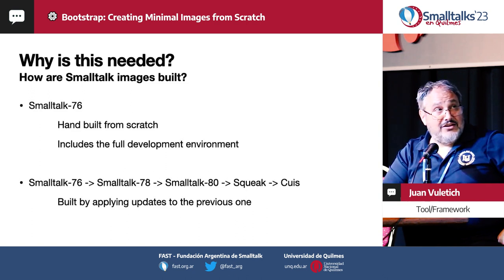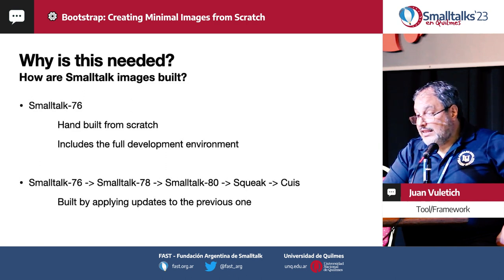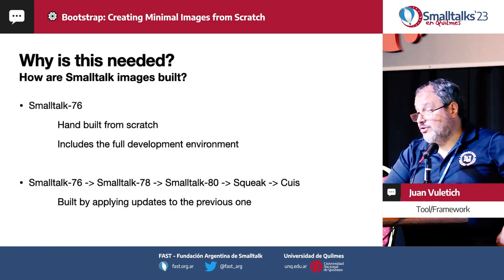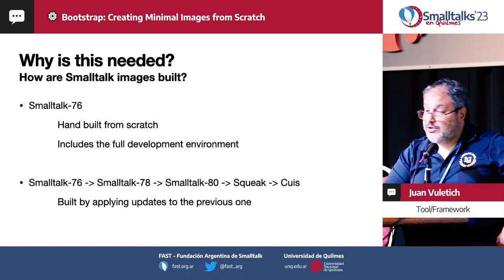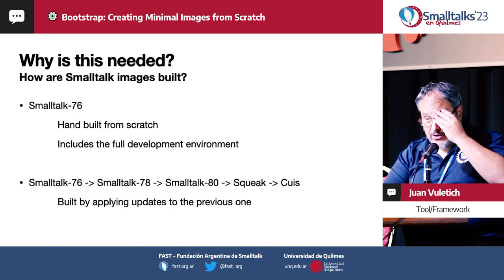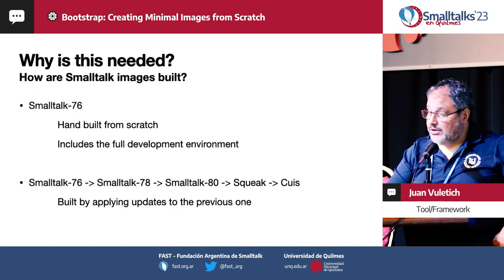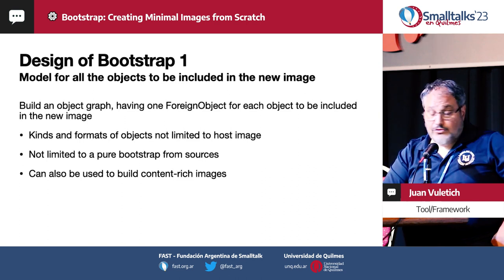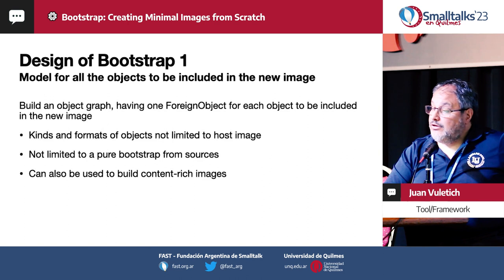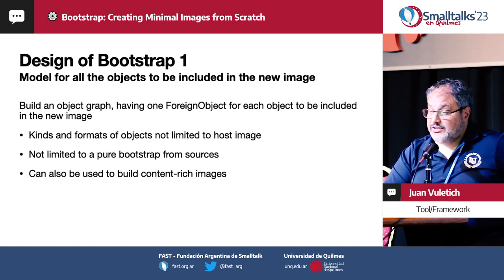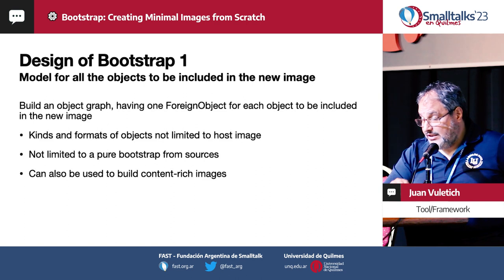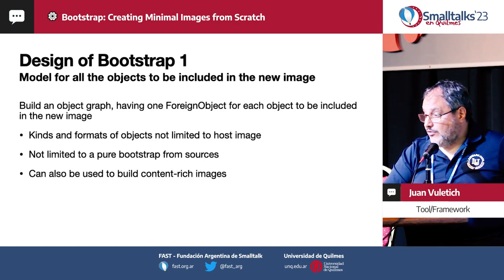So why is all this needed? How are Smalltalk images built? The last ancestor of Smalltalk that was written from scratch was Smalltalk 76. Since then, every released image of Smalltalk 80, Squeak, and Pharo was derived by applying updates to the previous one. So in order to describe the Smalltalk model of everything that will be part of our new image, we need to describe the graph of objects it will include. And for each of these objects, we need to store some information that is usually hidden by the VM in a standard running system.